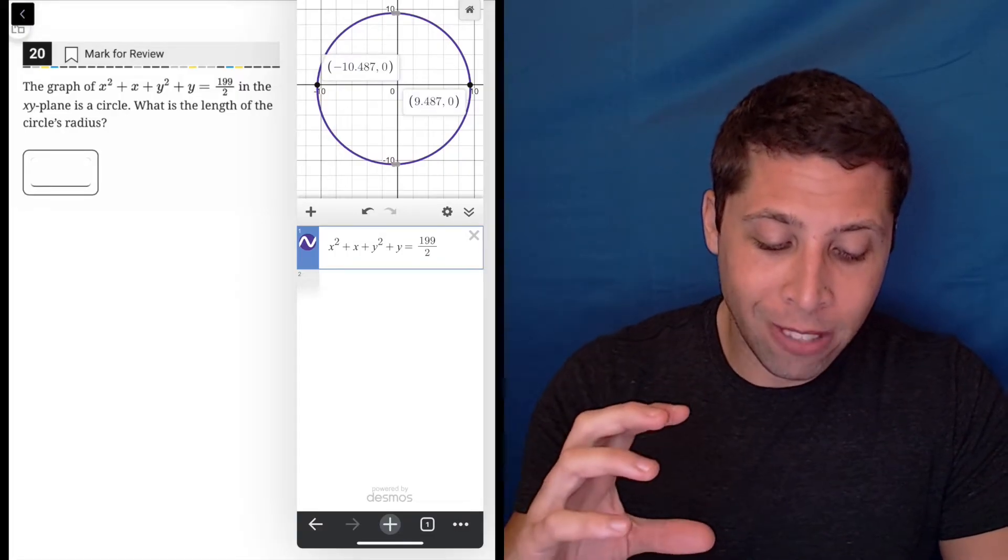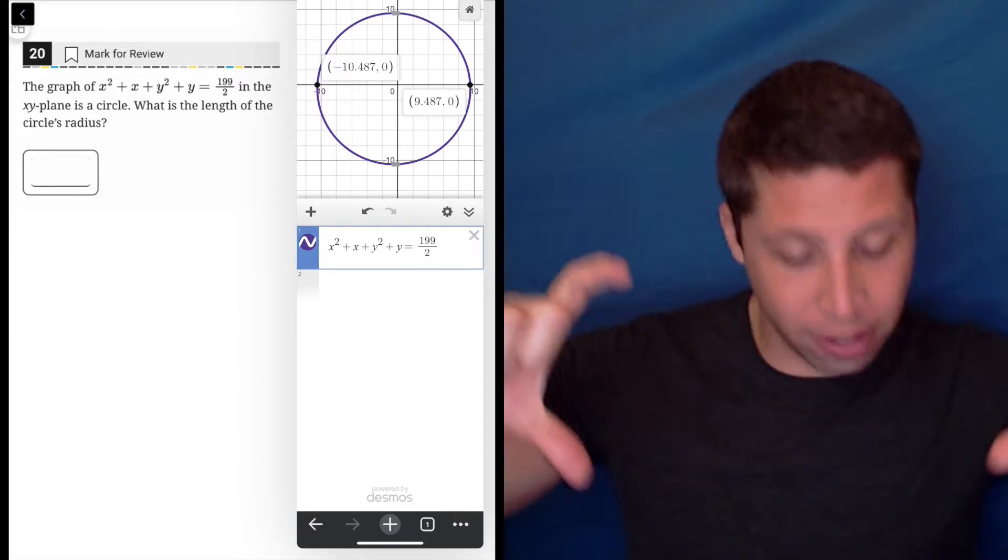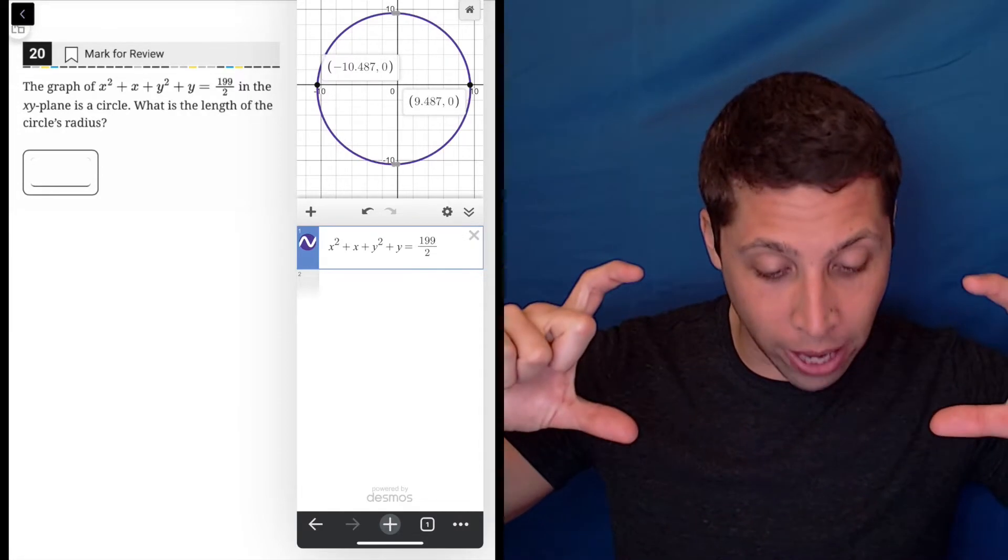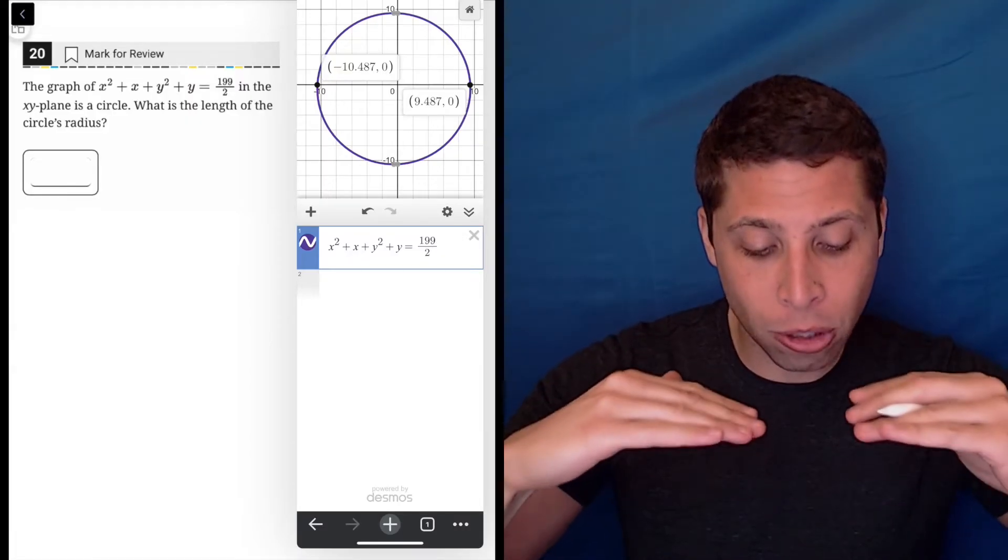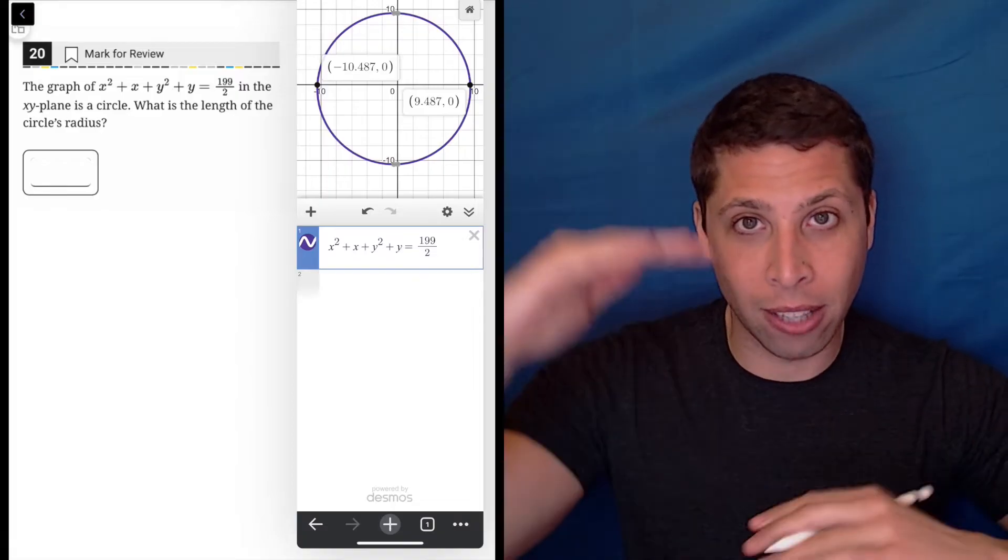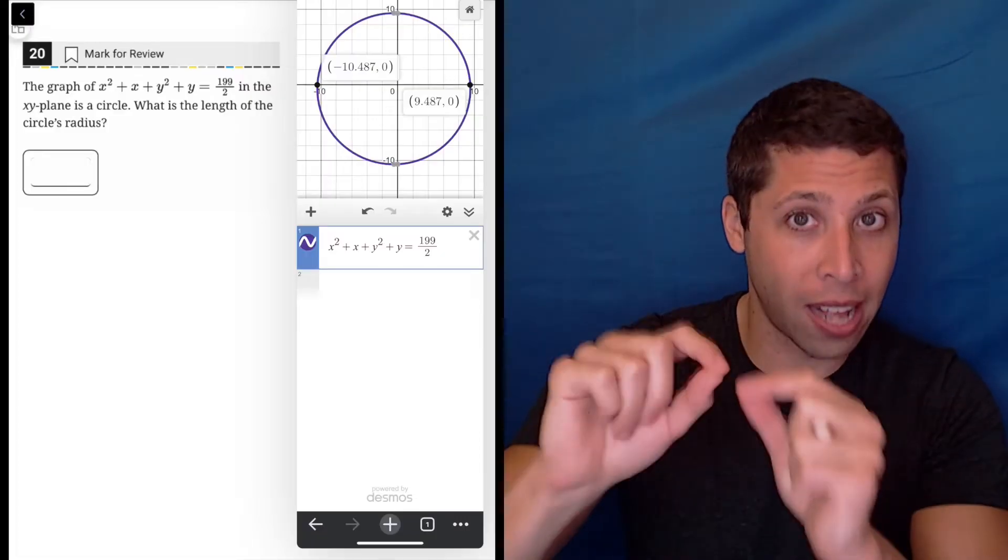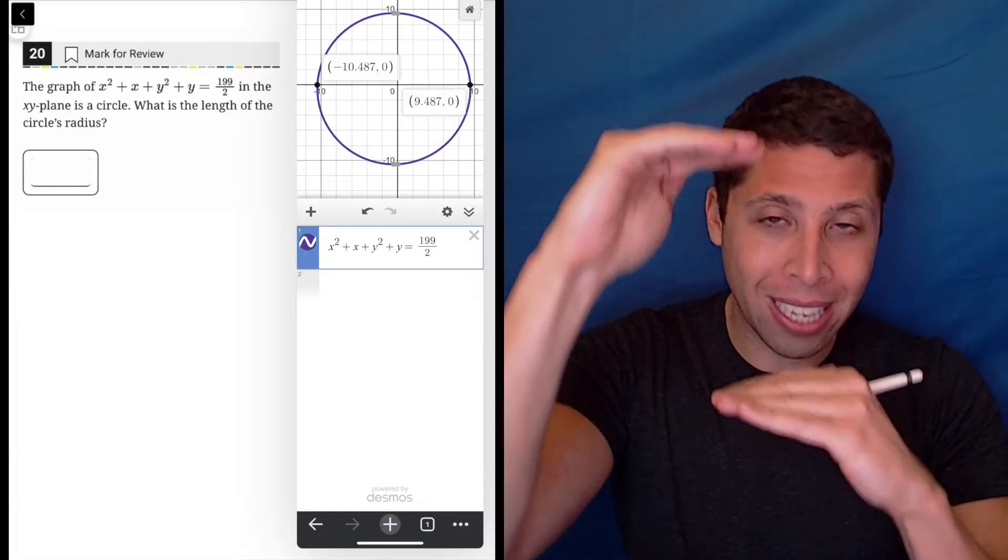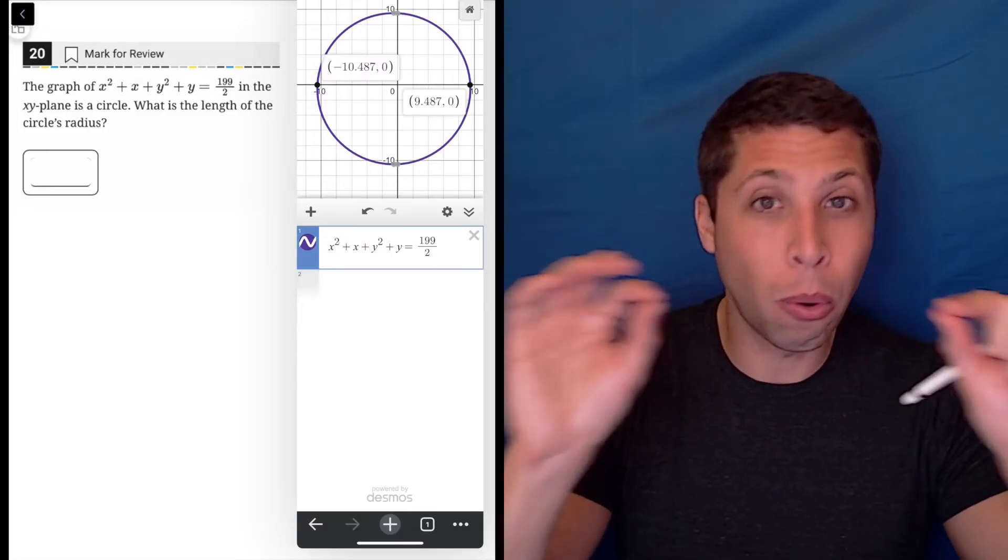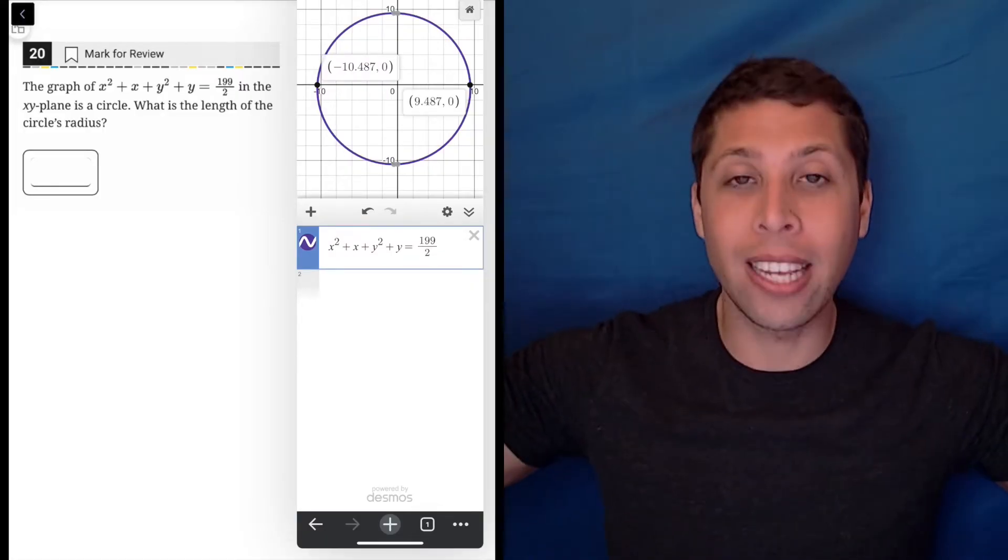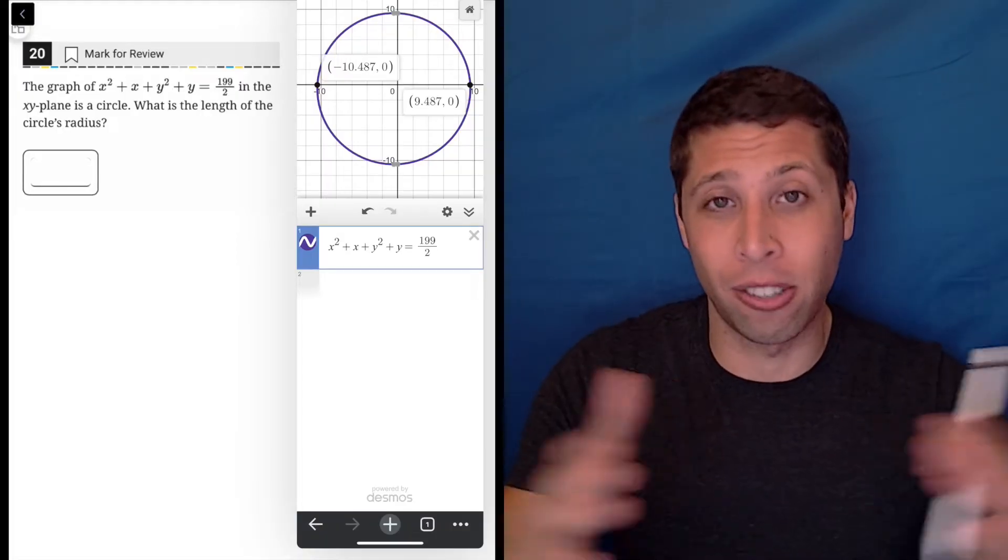We can't use that, I don't think, to find the radius because you can kind of tell the circle's a little shifted. You can see in the top, the top of the circle is a little bit below 10, and the bottom of the circle is a little bit below negative 10. So the center of the circle is not the origin. It's not the middle of the graph. So because of that shift, the radius is going to get kind of played with a little bit. The x-axis here is not a diameter.